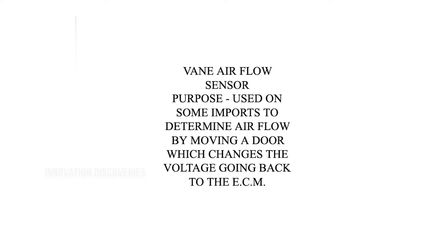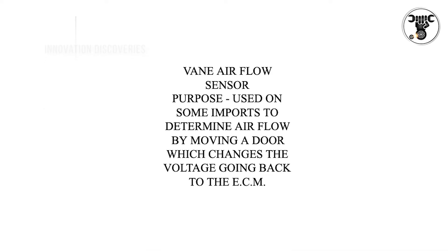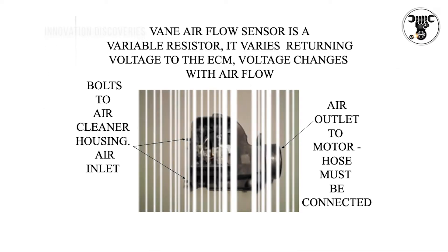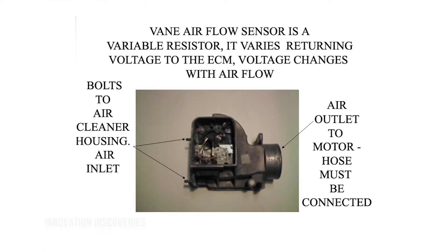Vane air flow sensor purpose: used on some imports to determine air flow by moving a door which changes the voltage going back to the ECM. The vane air flow sensor is a variable resistor — it varies the returning voltage to the ECM, and the voltage changes with airflow.